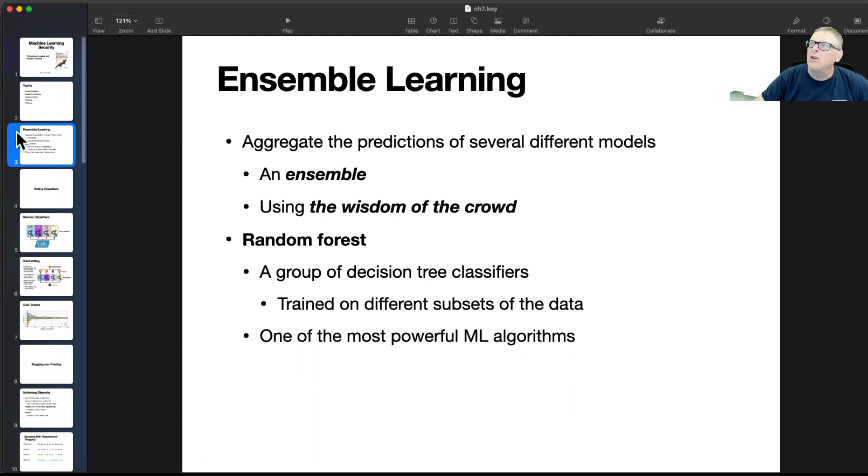Ensemble learning is where you aggregate the predictions of several different models. You have an ensemble of models. You don't just have one learning model you've trained on something. You train multiple models, and then you combine their outputs. This seems like it would make it more accurate. It's surprising to me that this is actually cost-effective in terms of processing time, but apparently it is.